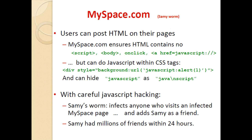Now that takes us to Sammy. We are going to replicate the Sammy worm. This was something that happened on MySpace.com some time ago — predecessors of Facebook. Users could post HTML on their pages. MySpace ensured HTML contained none of those script symbols, but you could do JavaScript within CSS tags and hide code there. That's apparently how they got it in. We're just going to make it easy and assume we have a text box or text area.